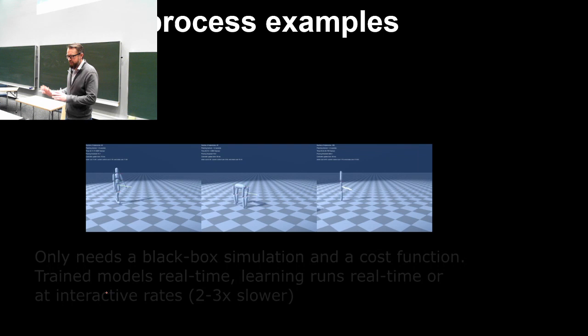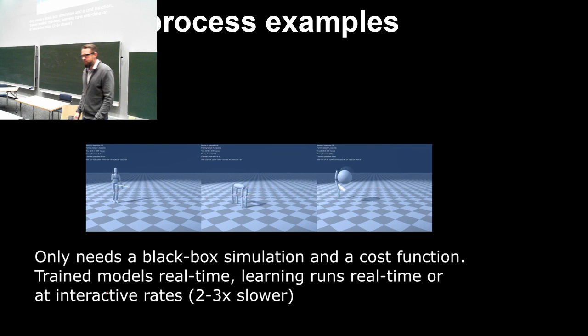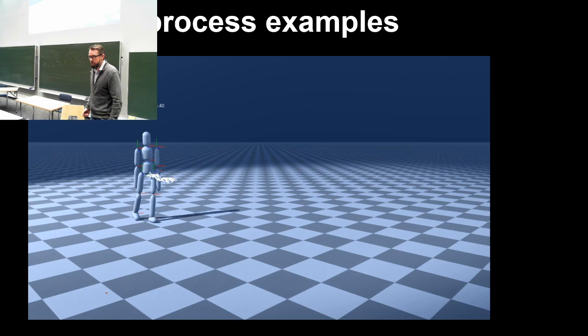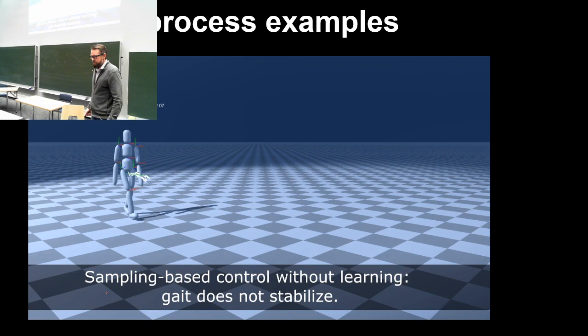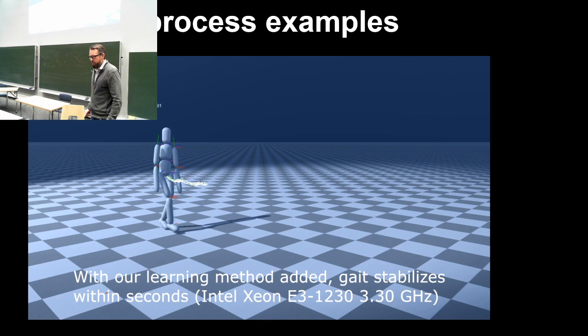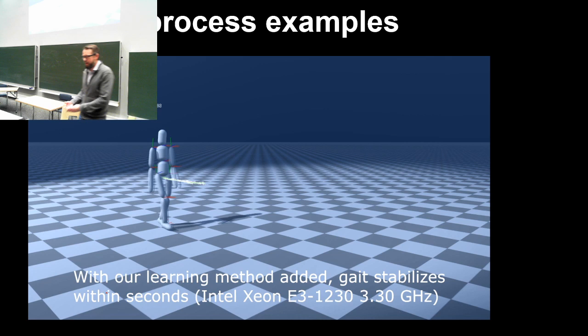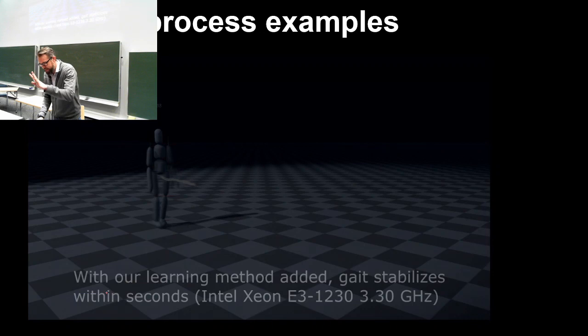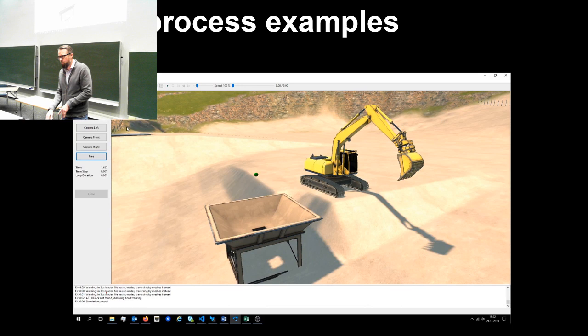Another example involves pre-teaching to make a human walk, which is quite a challenging task — walking control is difficult. Looking at how it goes in the beginning, it looks like, I don't know, a student of a technical university on a Friday evening after several beers. But once the AI is using this technology, it stabilizes and gets better.